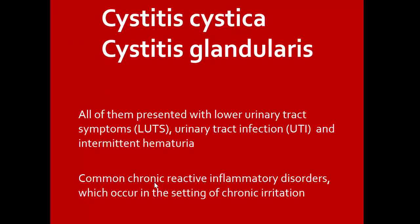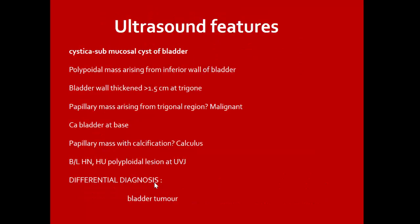Cystitis cystica and cystitis glandularis both present with lower urinary tract symptoms, urinary tract infection, and intermittent hematuria. They are common chronic reactive inflammatory disorders occurring in the setting of chronic irritation. Ultrasound features include cystic submucosal cystitis of the bladder, a bulboid mass arising from the inferior wall, bladder wall thickened more than 1.5 cm at the trigone. A papillary mass arising from the trigonal region may be malignant. Cancer of the bladder base may show papillary mass with calcification.